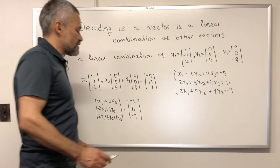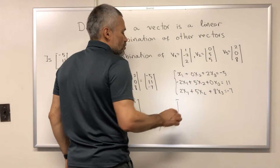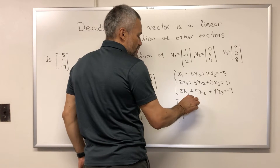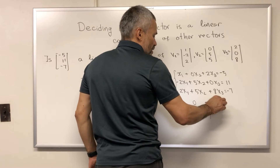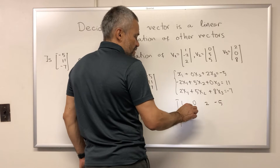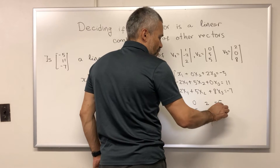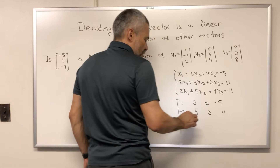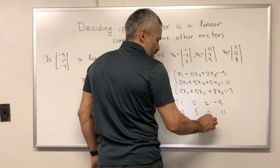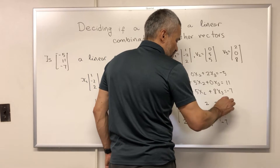To solve this system, let's produce the augmented matrix: 1, 0, 2, negative 5; negative 2, 5, 0, 11; 2, 5, 8, and negative 7. And let's do row reduction.